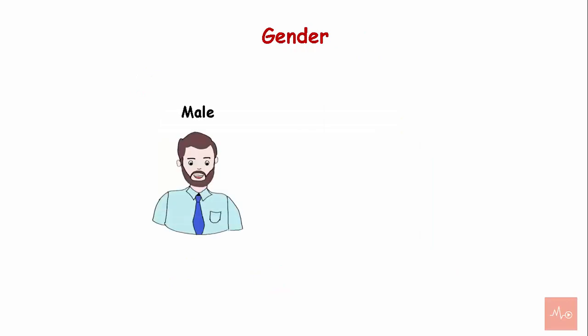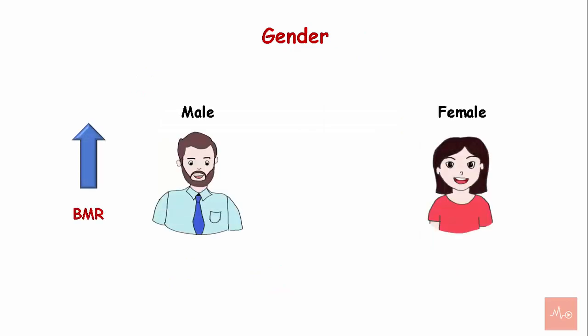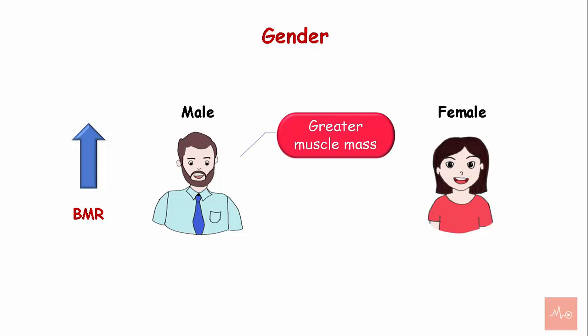Gender. Males are found to have a higher BMR compared to females. This can be attributed to the greater muscle mass and lower body fat percentage in males than in females.